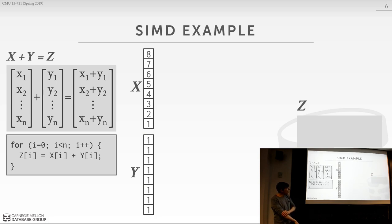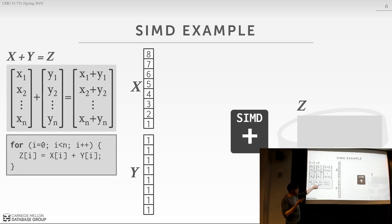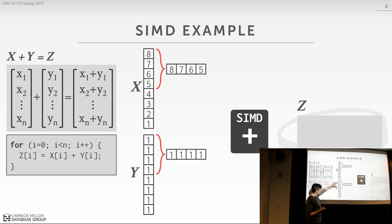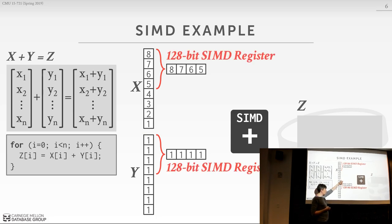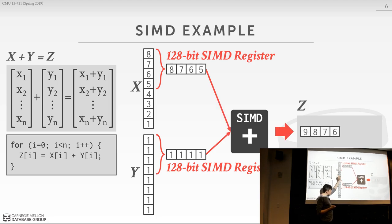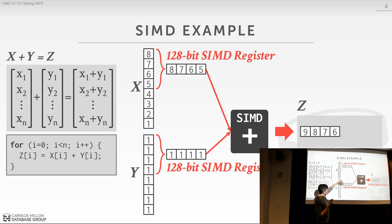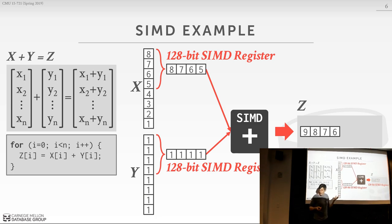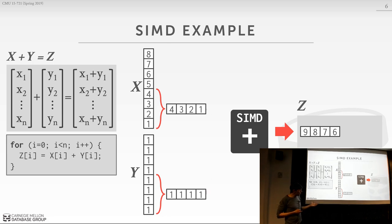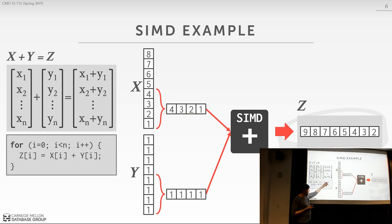With SIMD, instead of going through every offset one by one, we collect a bunch of data items and put them into a special SIMD register on the CPU. In this case we're using 128-bit SIMD registers — each value is 32 bits, so we can store four 32-bit values in one register. Then a single SIMD instruction performs the addition across both registers simultaneously, element-wise. What was eight individual addition instructions is now down to two SIMD instructions — that's the basic idea of SIMD.